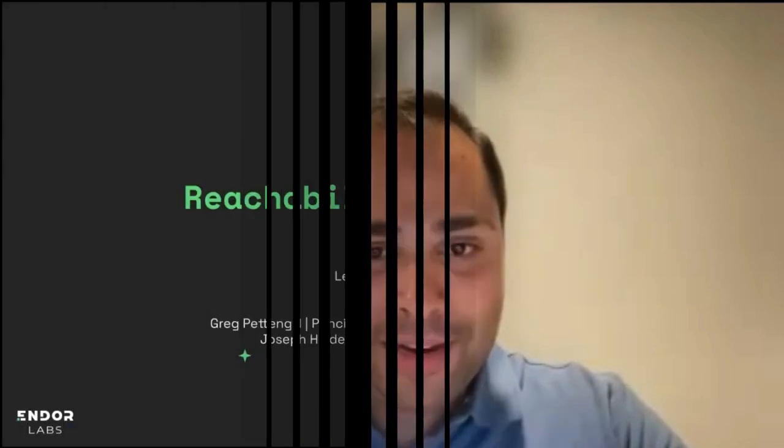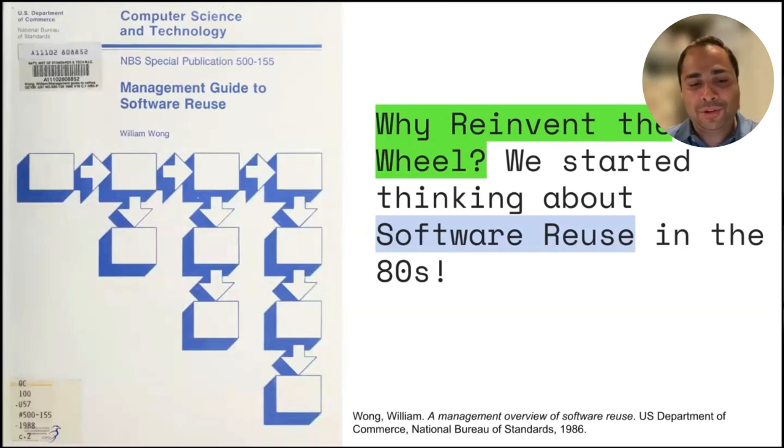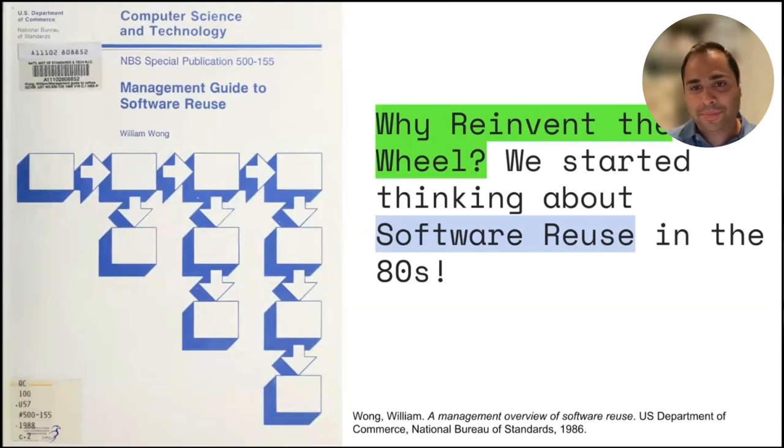I am Joseph McHader. I'm a researcher at Endor Labs working on the program analysis team. Before joining Endor Labs, I've been a PhD student at the Delft University of Technology. We have been investigating using call graphs and applying program analysis to software supply chain problems. Before we dive into reachability analysis, it's always great to look back at how we came to the place where we start reusing a lot of libraries and depending on open source in our software products.